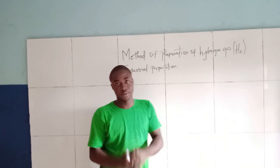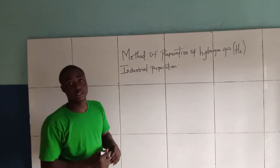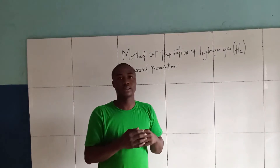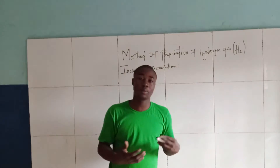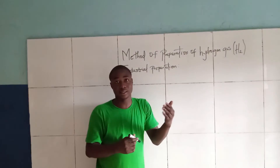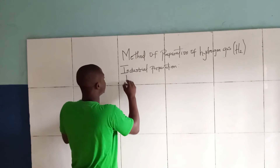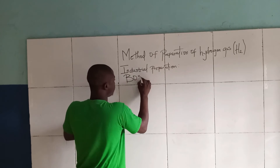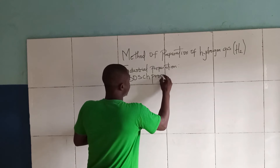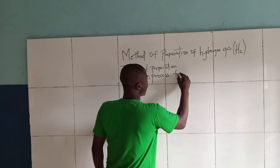The industrial process I'll discuss first is the Bosch process. The Bosch process is a process used in the production of hydrogen gas, and this is done from water gas.